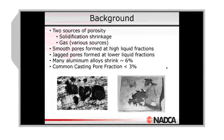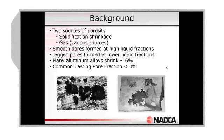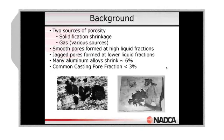As we talked about yesterday, there are two general sources of porosity in die castings. The first one is solidification shrinkage — the volumetric shrinkage that occurs as we go from liquid to solid. There's absolutely nothing we can do to prevent that from occurring, but what we can do, as we talked about yesterday, is as the casting solidifies, feed more liquid into the cavity to make up for the reduction in volume.